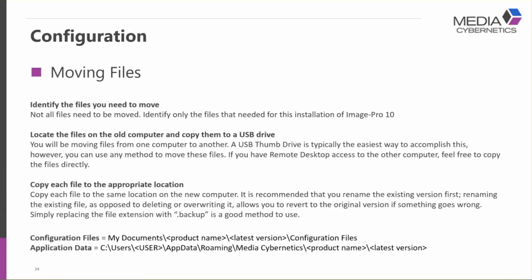To move these files, identify them on the existing installation, copy them to a USB drive, move them to the new computer, and write them to the exact location you copied them from. If you have remote access to the source computer you can copy directly; otherwise a USB drive is the easiest method. An important note: before copying files, it's recommended that you rename existing versions — the easiest way is to change the file extension to .backup, which easily identifies it as a backup and allows you to revert if something goes wrong.